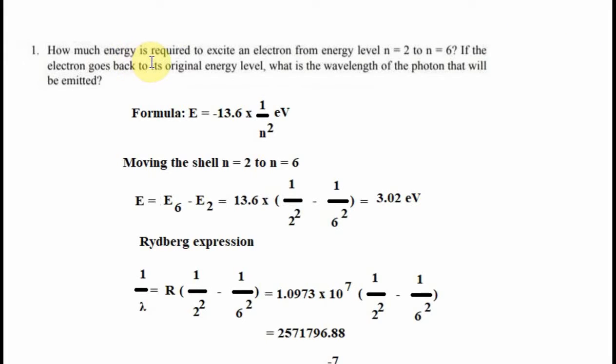How much energy is required to excite an electron from energy level n equals 2 to n equals 6 if the electron goes back to its original energy level? What is the wavelength of the photon that will be emitted?